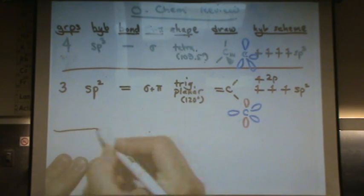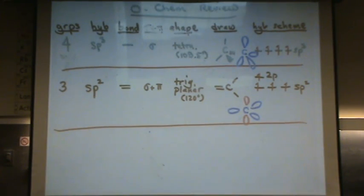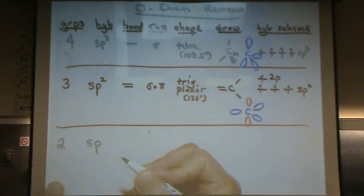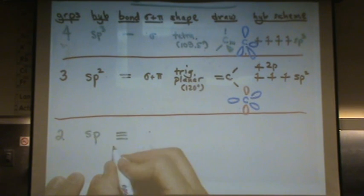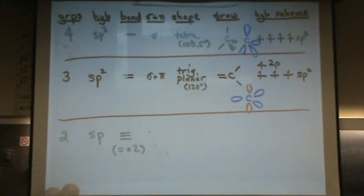Now we're going to do two groups. And this will be the final one. A carbon can also have two groups. It's called sp hybridized. So one of the s and one of the p is hybridized. This will cause it to have triple bonds. Though in some cases, it could be two double bonds. So I'll put a double bond times two. But usually it's a triple bond.